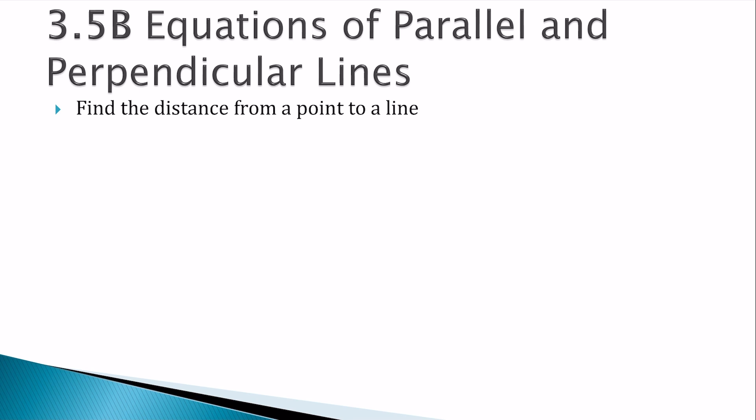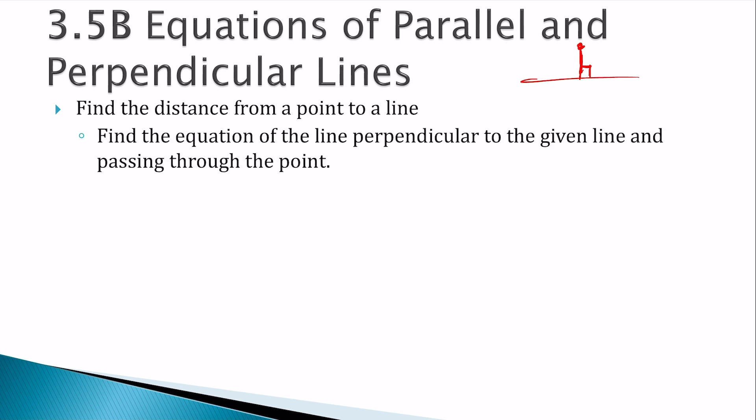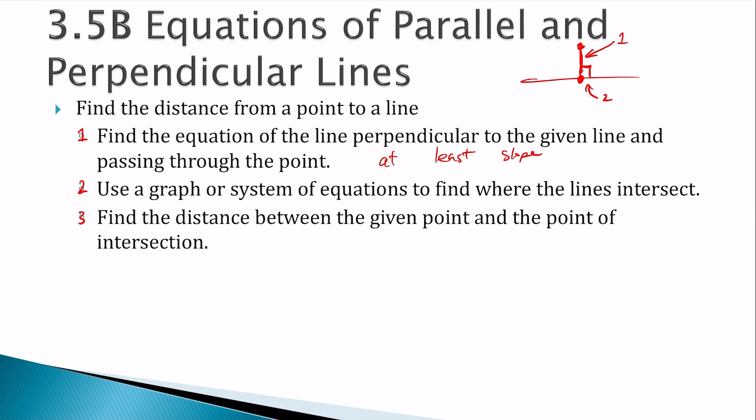We can also find the distance from a point to a line. Remember, when you measure distance from a point to a line, we want to measure the perpendicular distance, which would be the shortest distance. So we could find the equation of the line perpendicular to the given line and passing through the point. So this is step 1, find the equation of that line, or at least the slope. Step 2, use a graph or system of equations to find where the lines intersect. So step 2 is find that point. Step 3, find the distance between the given point and the point of intersection. So step 3 is find that distance using the distance formula.